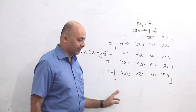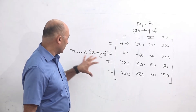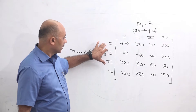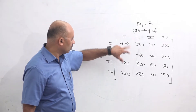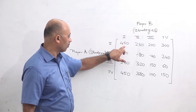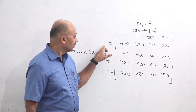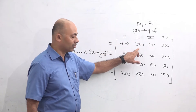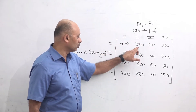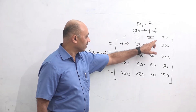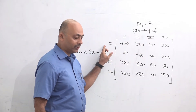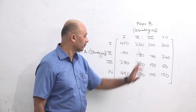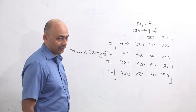This is the payoff matrix that is given. So for example, if player A adopts strategy number 1 and player B also adopts strategy number 1, the payoff for player A will be 450. If player B adopts strategy number 2, the payoff for player A will be 230. If player B has strategy 3 and player A continues with strategy 1, then the payoff is 200, and so on. So this is how we read the payoff matrix.